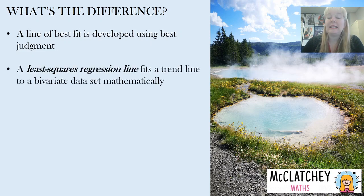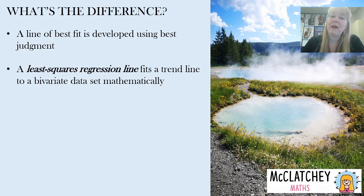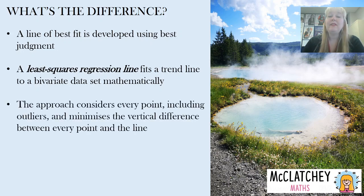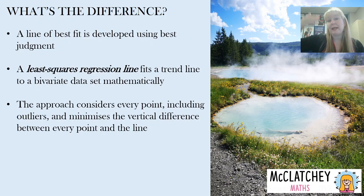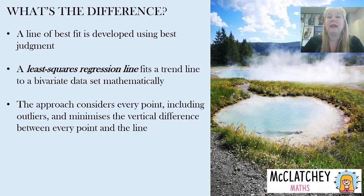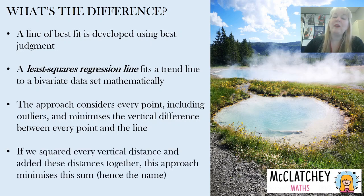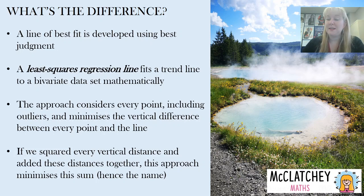A least squared regression line, or LSR line, fits what's called the trend line — which we also saw in Excel and Desmos — and it fits that bivariate data line mathematically using a formula. This approach looks at every single point individually, including outliers, and tries to minimize the vertical distance between every single point and the line. In a nutshell, if we were to square every vertical distance and add all the distances together, the approach minimizes the sum of those distances — that's where we get the name: least squares regression line.